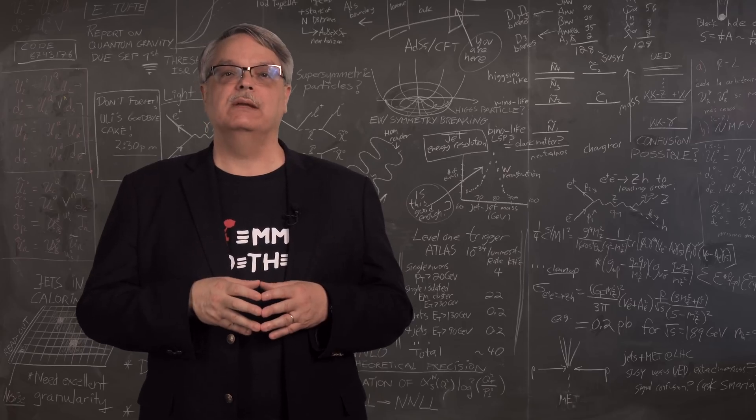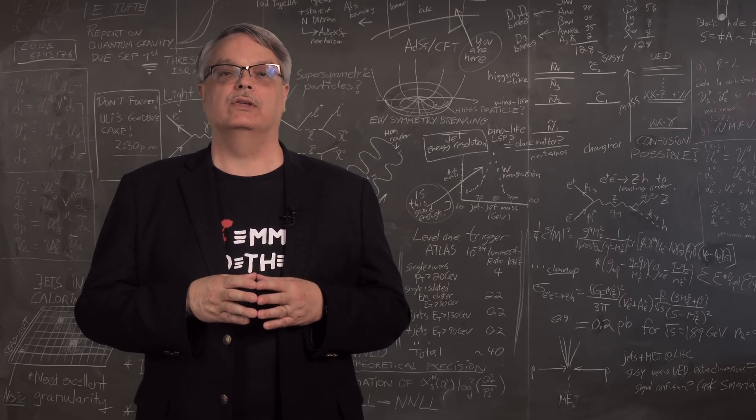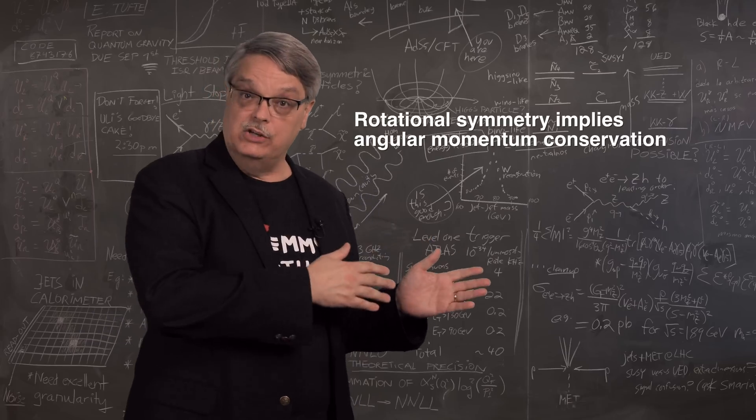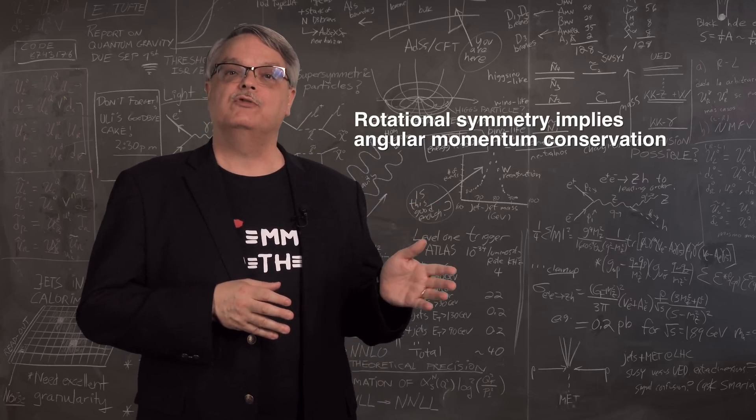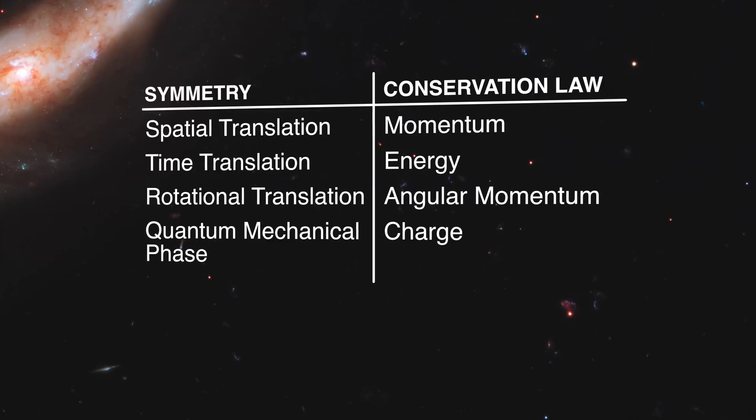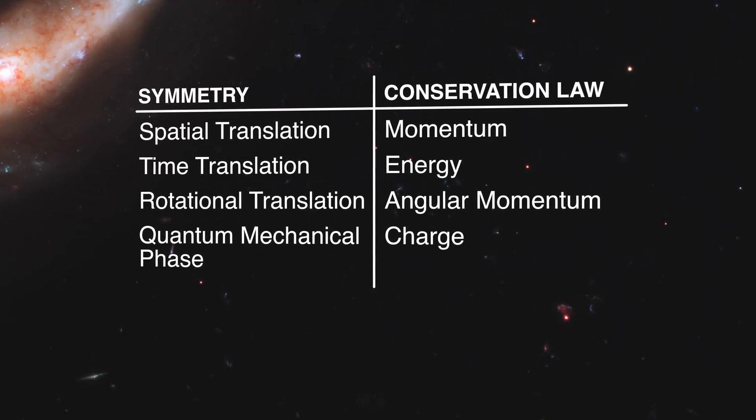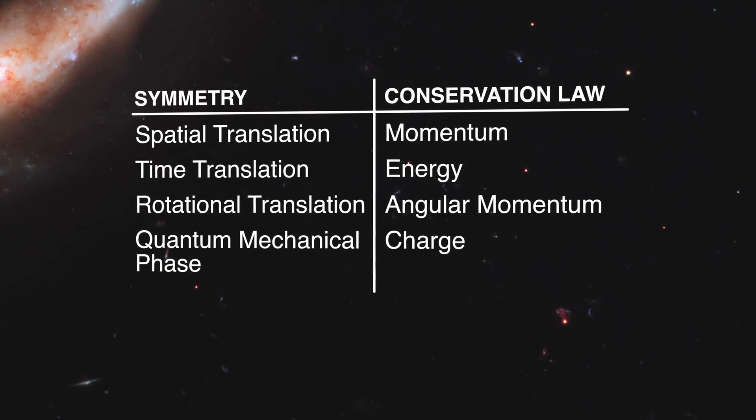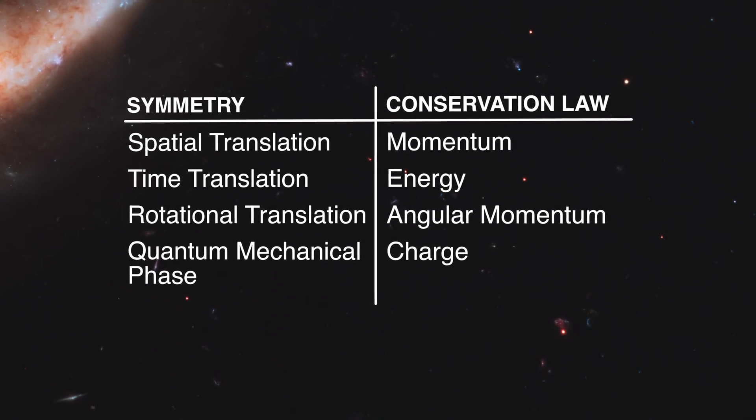A third symmetry is interesting because of the fact that the laws of the universe don't care which direction you call zero. You can rotate in any direction, and the laws of the universe are unchanged. This symmetry results in the law of conservation of angular momentum. These three familiar conservation laws arise from symmetries in the spatial translation, time translation, and rotational translation properties of our equations.